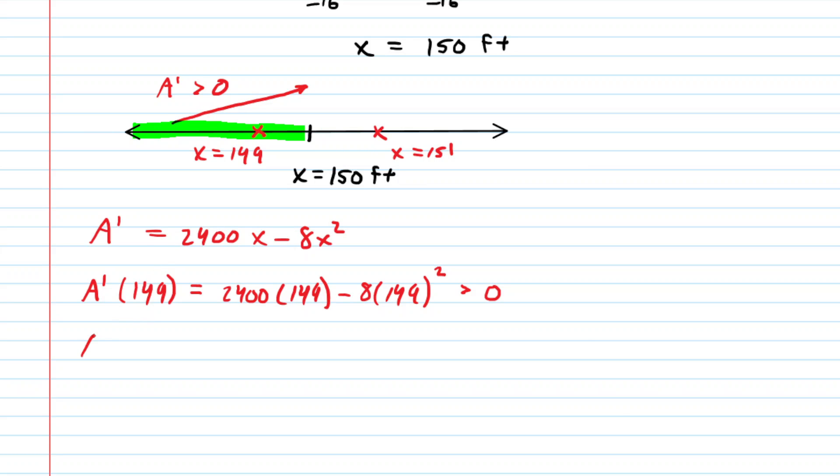But then we plug in 151 next into our derivative. And in this case, the value of the derivative at x equals 151 turns out to be negative or less than zero. And since the derivative is less than zero or negative, that means the area function is decreasing along the interval for when x is greater than 150. So for this interval right here. And if you look at our little graphic here, you can see that indeed, right at x equals 150, the area has been maximized. So according to the first derivative test, the area is maximum at x is equal to 150 feet.